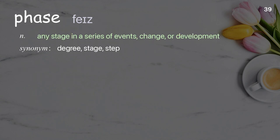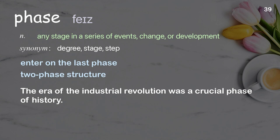Phase: Any stage in a series of events, change, or development. Examples: Enter on the last phase, two-phase structure. The era of the industrial revolution was a crucial phase of history.